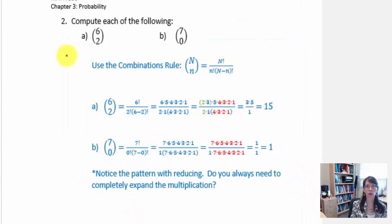In our first example for class work today we're going to compute each of the following. So if we see 6 over 2 in parentheses this actually represents a total of 6 elements in our set and we're looking for combinations of 2.